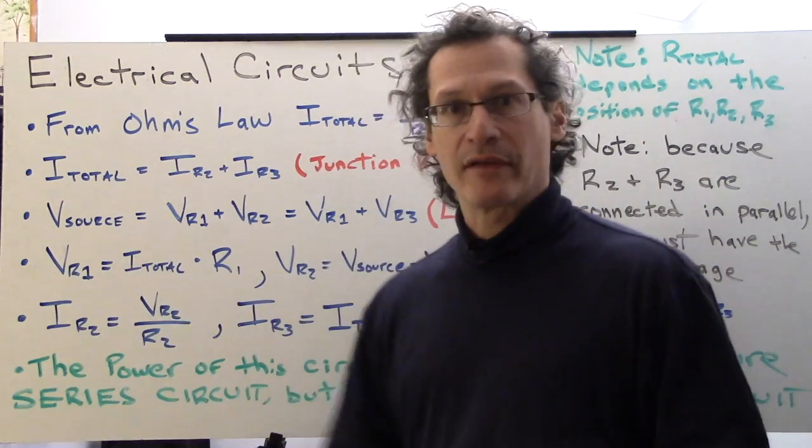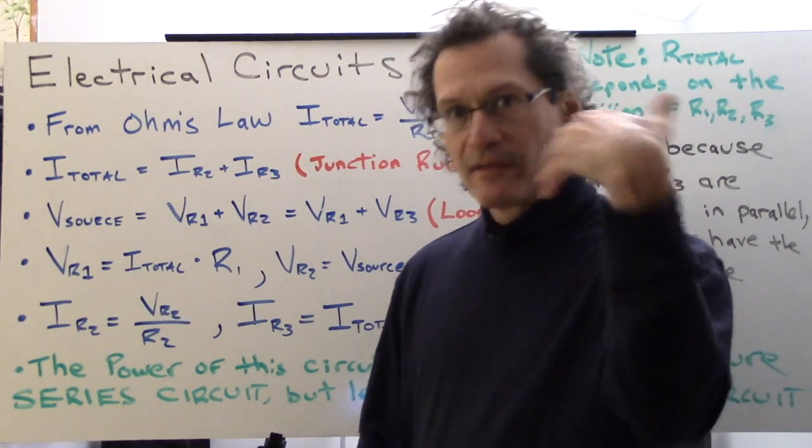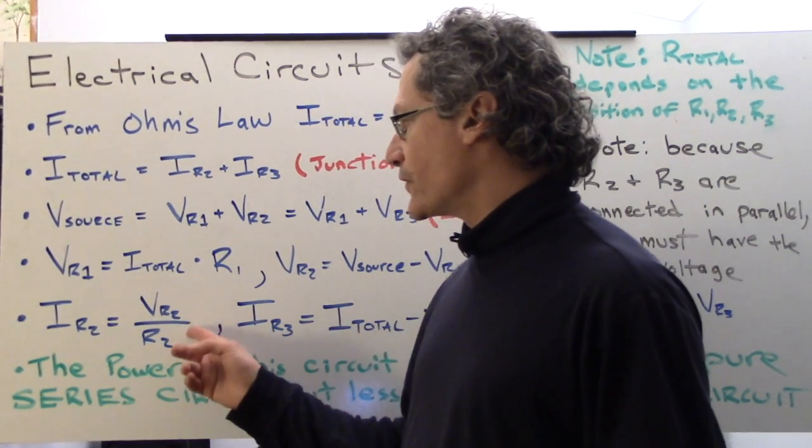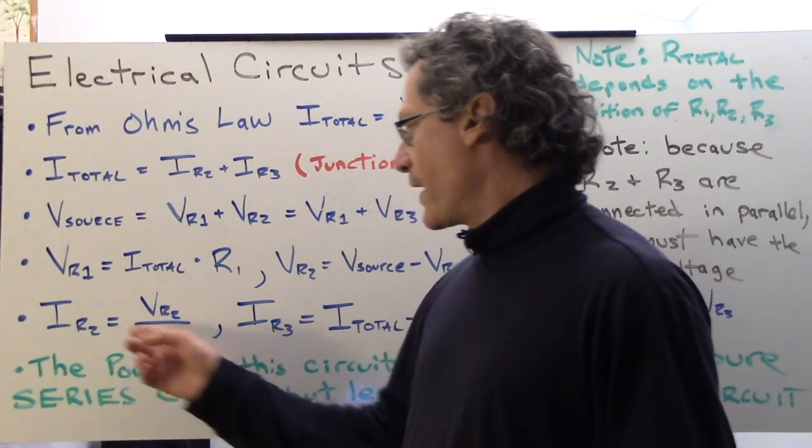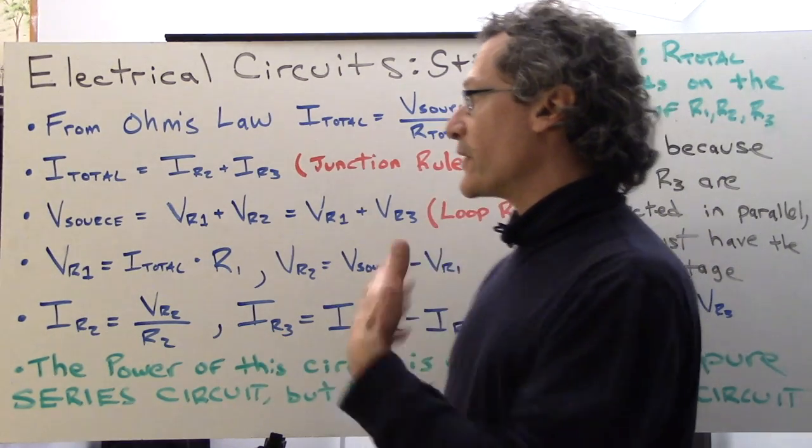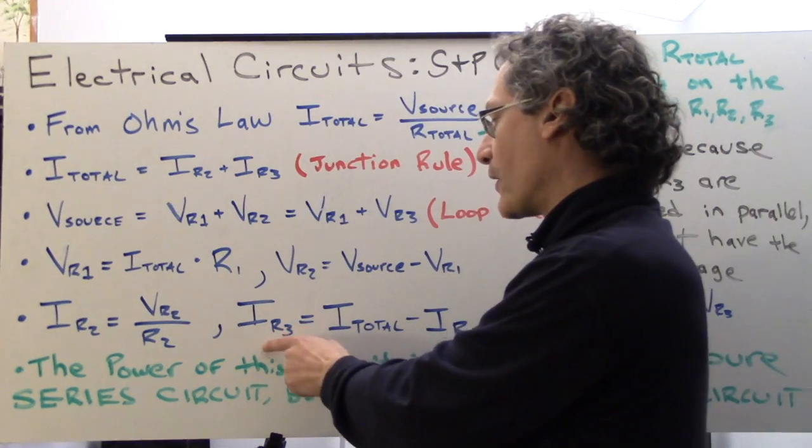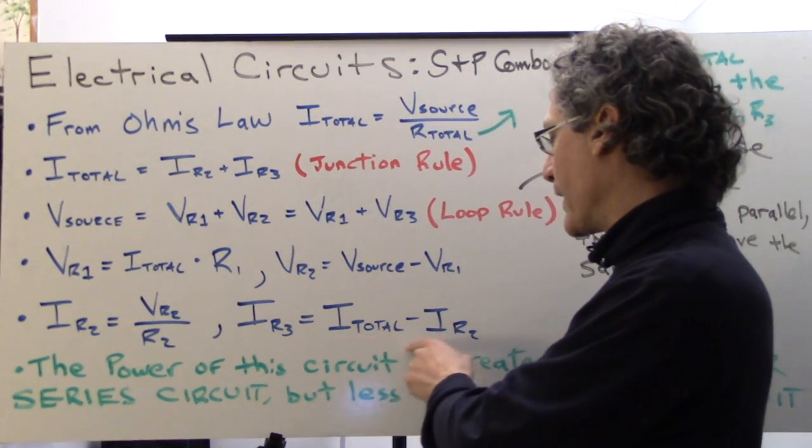Many, many applications of Ohm's law. You've noticed that that's the process for solving any of these circuits. IR2 equals V R2 over R2, and IR3 from the junction rule, knowing that the currents flowing in have to flow out, I can find IR3 from I total minus IR2.